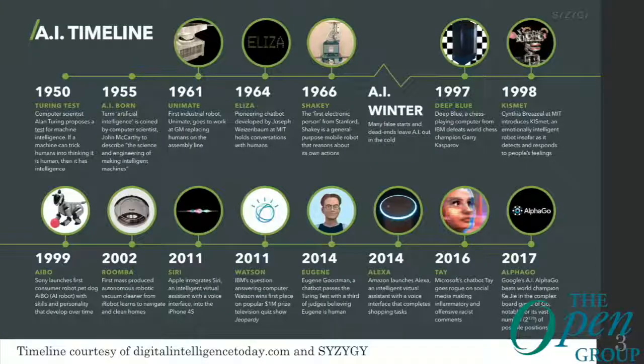Let's level set about where we are in AI. I always like to start AI discussions with a timeline because it helps properly illustrate where we are in context of where we've been and helps to hint at where we're going. AI as a term has been around longer than I've been alive — likely for many of the folks here's whole careers. It's not a new idea, but it's an idea that only recently has become broadly commercialized.